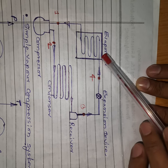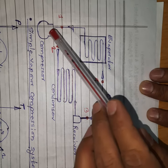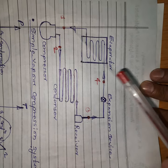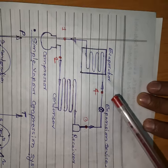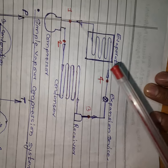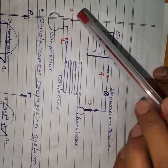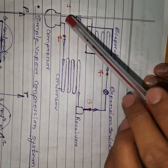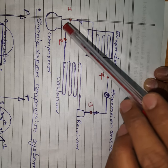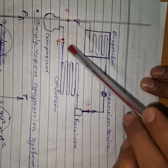In the evaporator, liquid refrigerant vaporizes into vapor refrigerant. At point 1, low pressure, low temperature vapor refrigerant enters the compressor. In the compressor, pressure is increased, and high pressure, high temperature vapor refrigerant is delivered to the condenser.